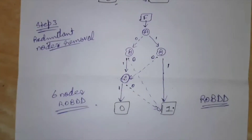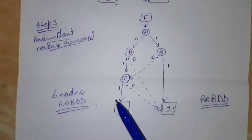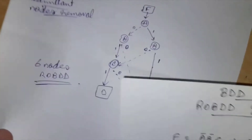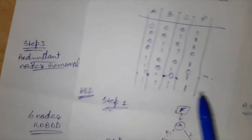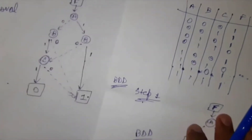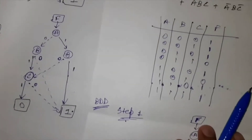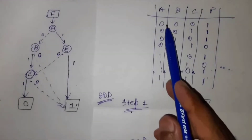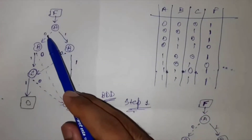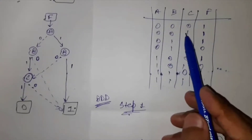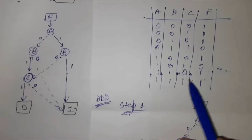We can check whether we have obtained a correct ROBDD diagram or not. It is very simple — I'll just explain. This is the truth table. Let me keep this ROBDD diagram side by side. We will check conditions here and see if the value is matched with the terminal node.